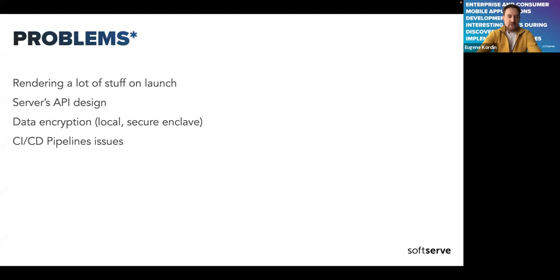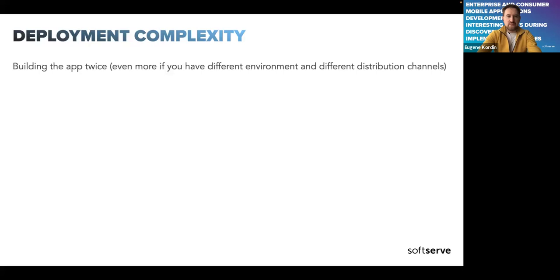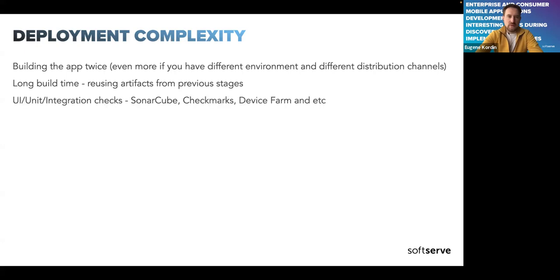CI/CD pipeline issues are nothing new for deployment. Most of the time our customers and projects have multiple environments, so we are building multiple times for different environment distributions, with separation and long build times. Also, it's usually hard to sell unit tests and automation tests in those phases — when we're faced with problems, we try to either write them ourselves or ask the customer to pay a bit more for an automation engineer.